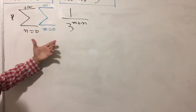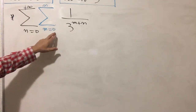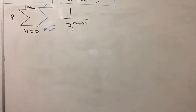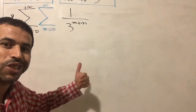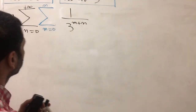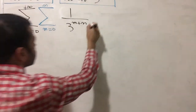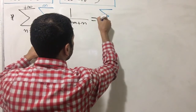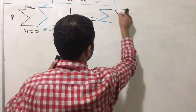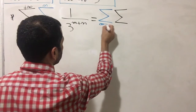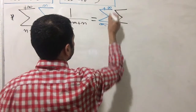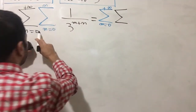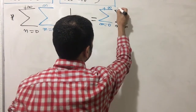Now I'm going to evaluate the second sum. The tricky part of this sum is that m goes from zero to n, while n goes from zero to plus infinity. To handle this, I'm going to change the order of summation. I'll take the outer sum and bring it inside, so m goes from zero to plus infinity and n goes from m to plus infinity.